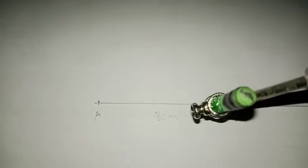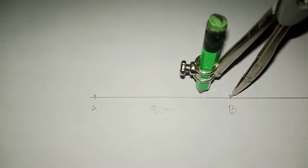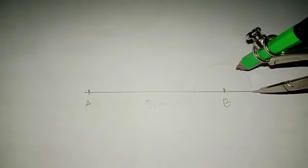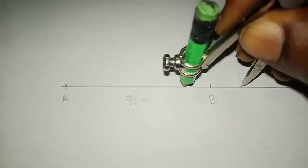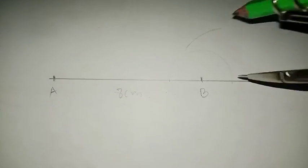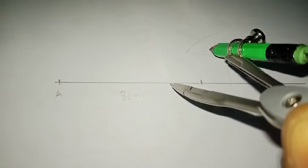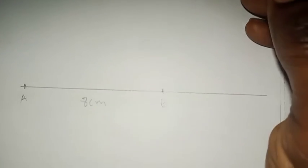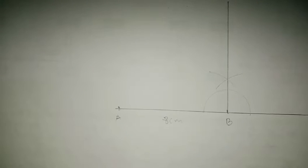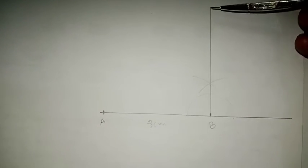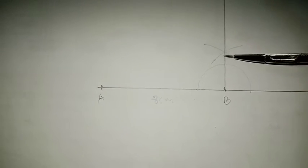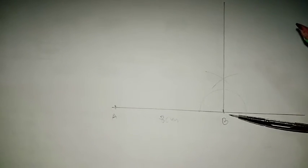If you don't know how to construct 90 degrees, consider watching our related video. Open your compass to any convenient radius and construct an arc. Then come and stand at the end, open more than half of that arc, and construct another arc at the top to intercept. Draw a straight line through the intersections — this forms a perpendicular line at 90 degrees.